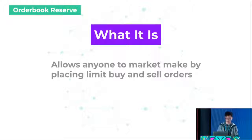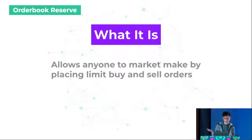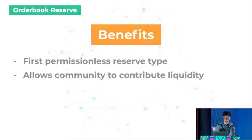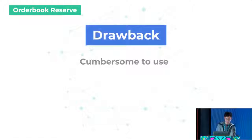The third reserve type is the Order Book Reserve. It allows anyone to market-make by placing limit buy and sell orders — your traditional order book like you see on centralized exchanges like Binance and Huobi. It is our first permissionless reserve type, meaning you don't have to come to Kyber or talk to any of us. You can interact directly with the smart contract and your reserve will automatically be listed. It also allows the community to contribute liquidity — different people interact with the deployed smart contract, put in their liquidity, and state their prices. Currently the drawback is it's quite cumbersome to use, so we are offering a bounty if you are able to improve the process.